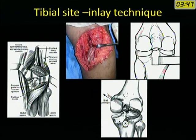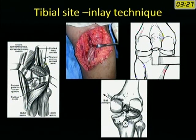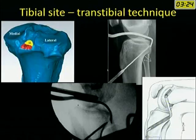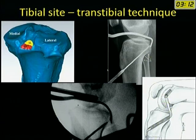For the tibial inlay approach, you access the back of the tibia using Burke's and Schaffer's approach, which goes between the medial head of gastrocnemius and the semimembranosus. You identify the tibial insertion site of PCL, make a trough there, and fix the graft with an internal fixation device, then pass the graft into the joint and into the femoral tunnel. For the transtibial method, you drill a tibial tunnel using a PCL-specific jig aiming device, confirming position with an image intensifier or arthroscope in the posteromedial portal.